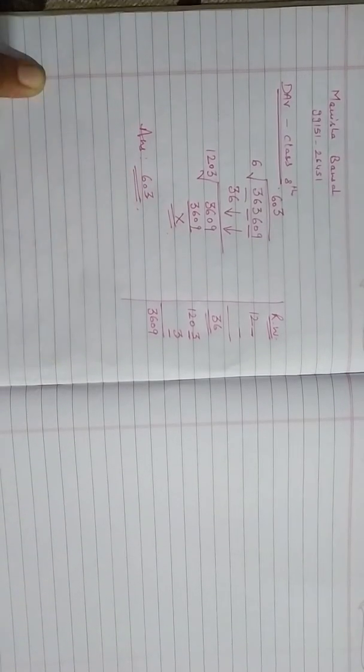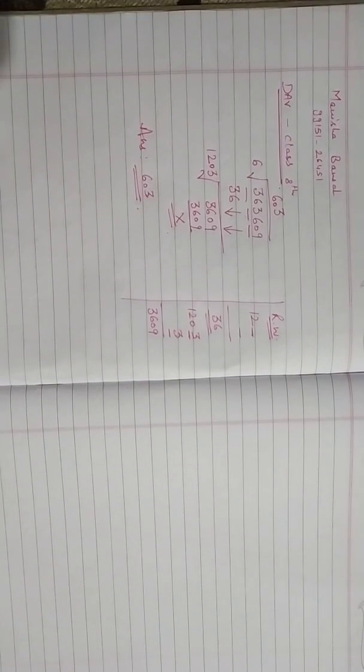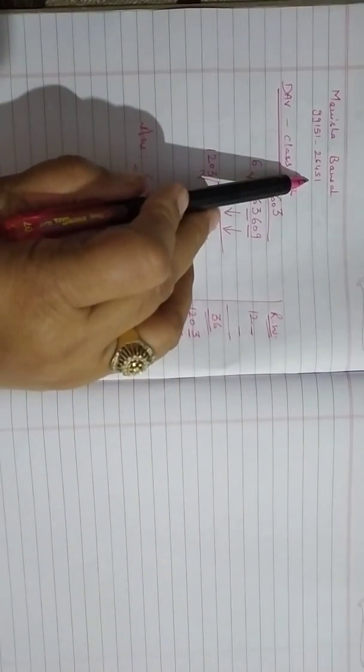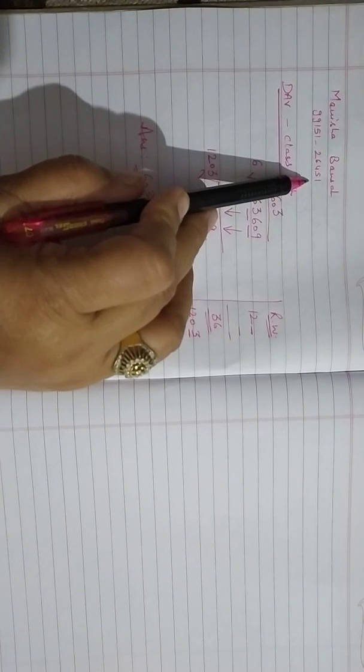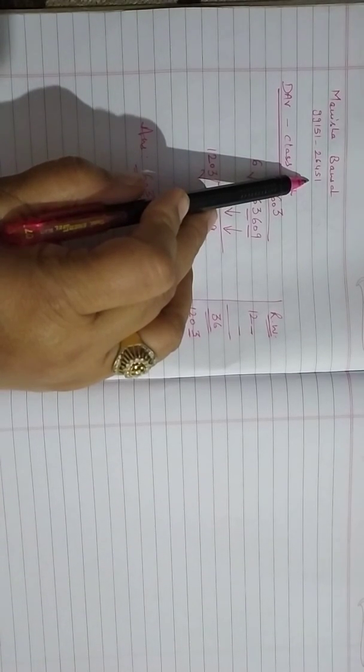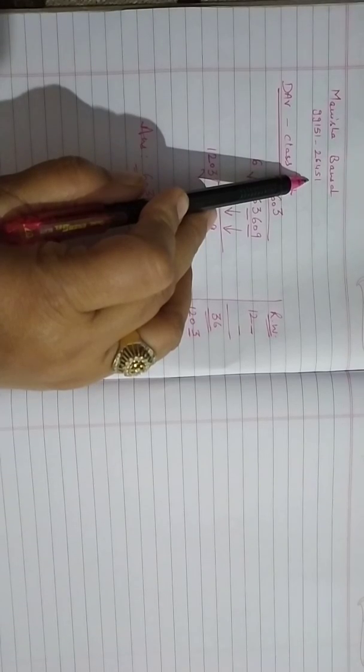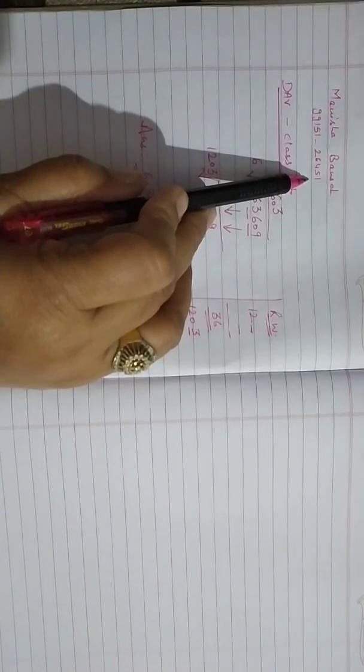It means the answer will be 603. I hope your query is sorted out. Children, don't worry - my number is mentioned here. If you're having any problem, you can call me on this number between 11 a.m. to 2 p.m.